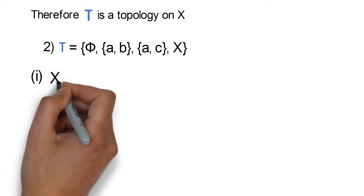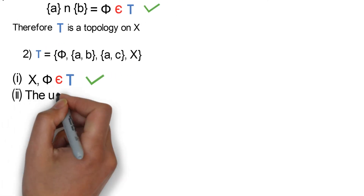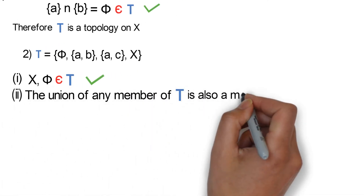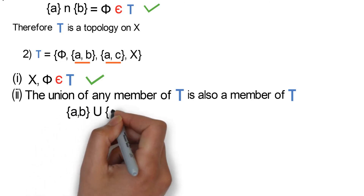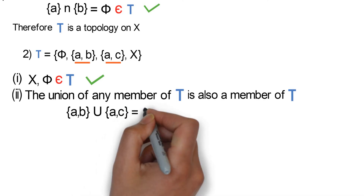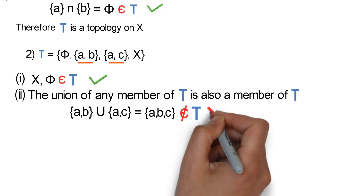Condition 1 states that the entire set X and the empty set are elements of tau. We can see that this is true from the given elements of tau in the question, so condition 1 holds. Condition 2 states that the union of any member of tau is also a member of tau. The union of the set {a, b} and the set {a, c} gives us the set {a, b, c}, which is not a member of tau. So condition 2 fails.